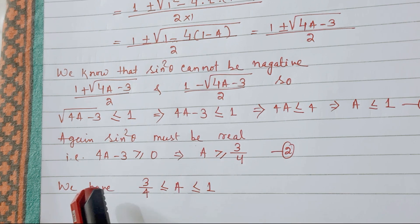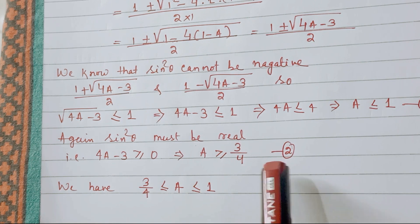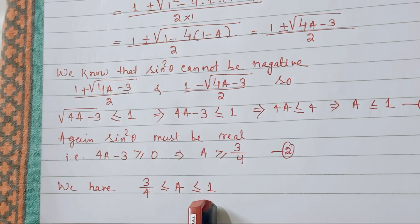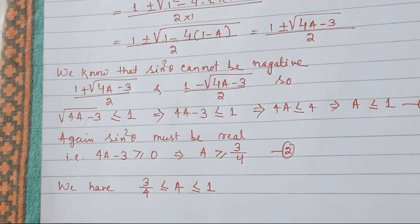So from both conditions, we have 3/4 ≤ A ≤ 1. Hence proved.